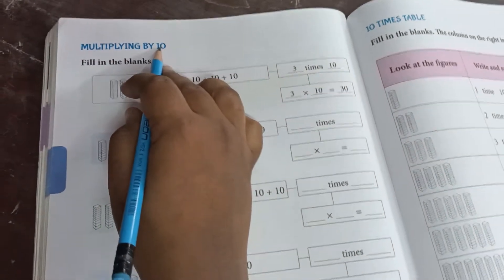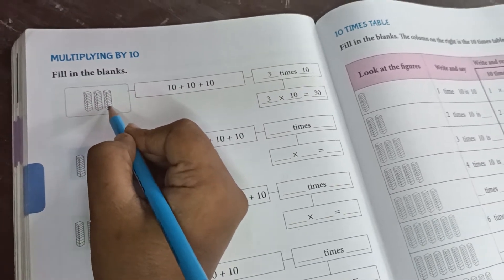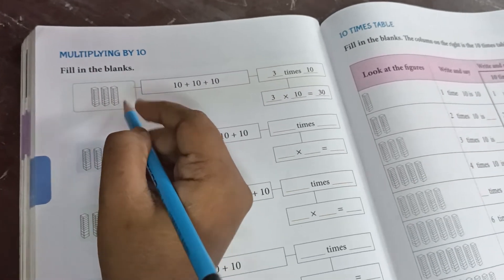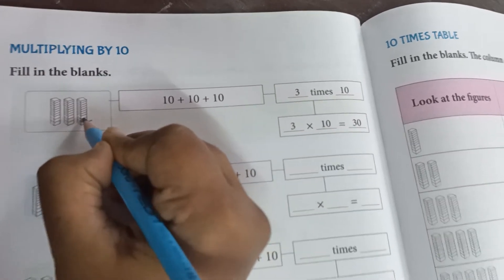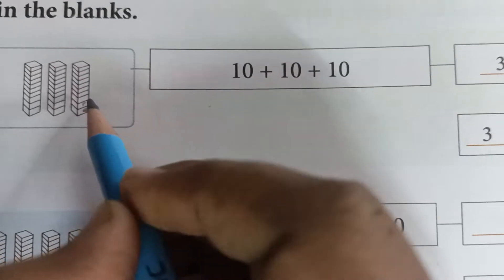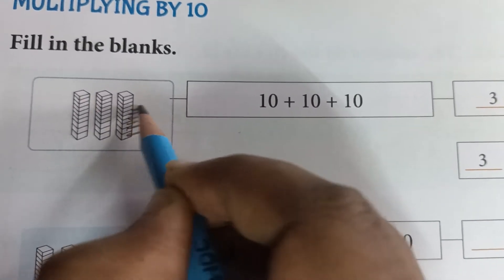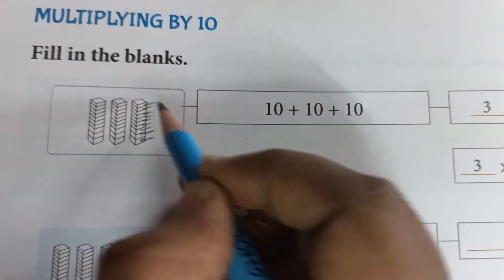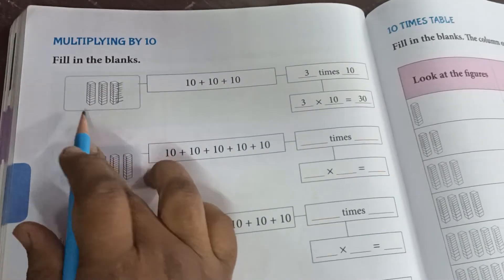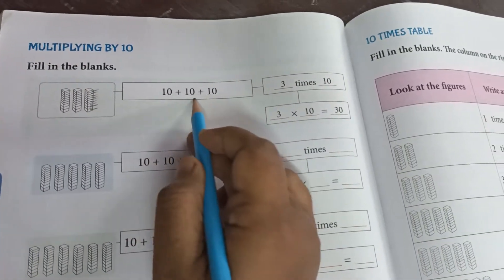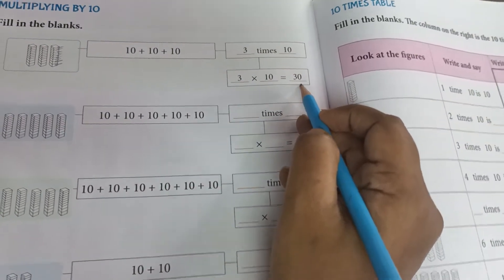Here is the multiplying by 10. Now we have given blanks here. In one hand, for example, you consider a set of books. So if we count here, how many of them are in a set? 1, 2, 3, 4, 5, 6, 7, 8, 9, 10. This is the total of 10. So here, how many of them are in a set of books? You have 3. 10 plus 10 plus 3 means 3 times 10. 3 multiplied by 10, the answer will be 30.